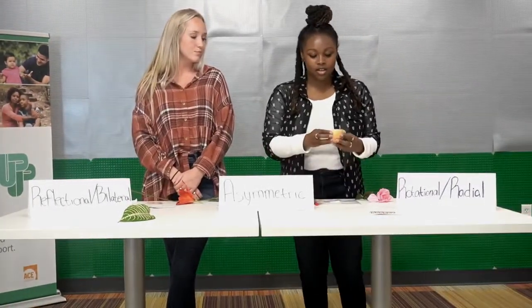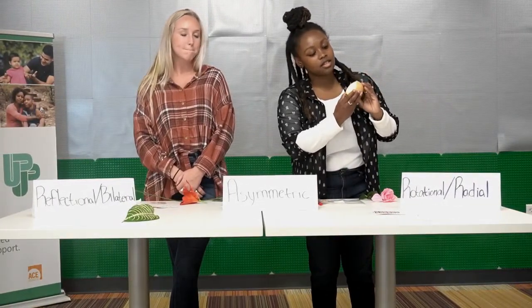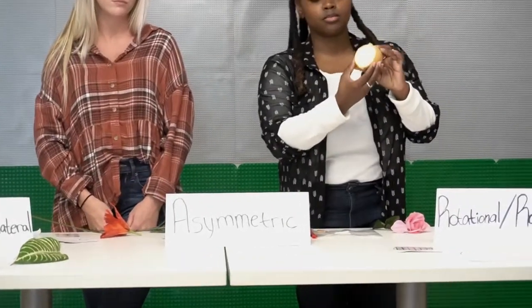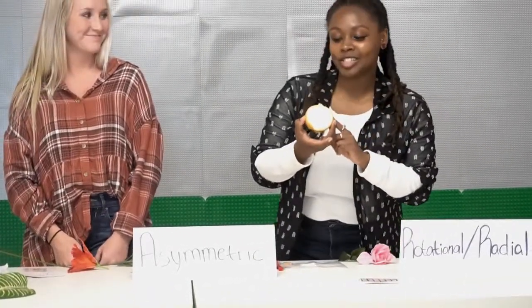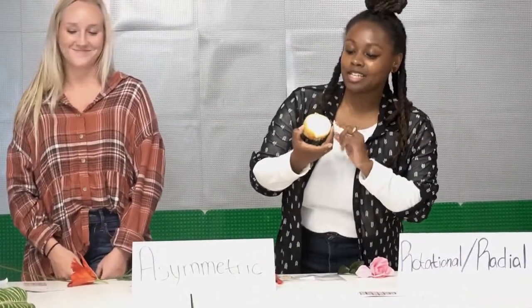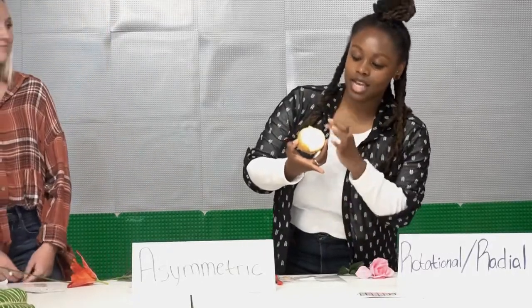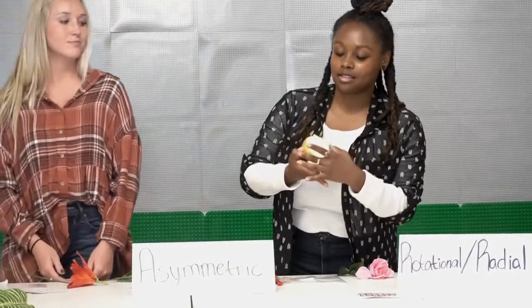Now let's look at this onion. Is this onion asymmetrical or symmetrical? It's reflectional, because if you split it down the middle it's going to be the same on both sides.